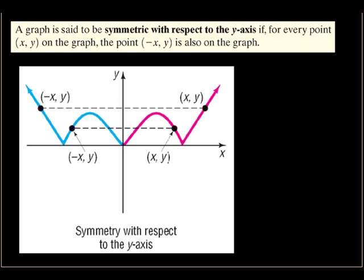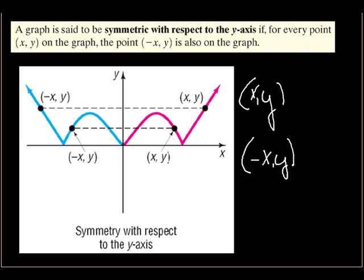For symmetry with respect to the y-axis, if you put a mirror on the y-axis, it looks the same on each side. If (x, y) is the original point, then (-x, y) is the symmetric point. For example, if the original ordered pair is (7, 9), the symmetric point with respect to the y-axis is (-7, 9).